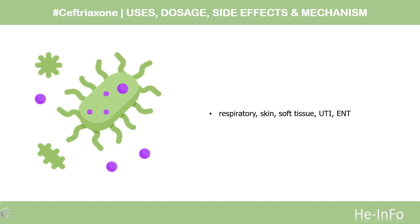What is ceftriaxone used for? Ceftriaxone is used for the treatment of infections — respiratory, skin, soft tissue, UTI, and ENT — caused by susceptible organisms.